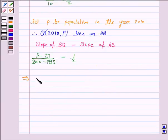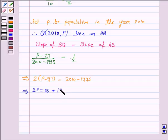So, this implies 2 into (P minus 97) is equal to 2010 minus 1995. This implies 2P is equal to 15 plus 194, as 2010 minus 1995 is 15 and 2 into 97 is 194, which we transposed to the right-hand side.